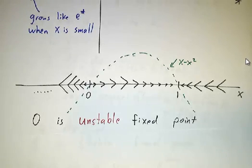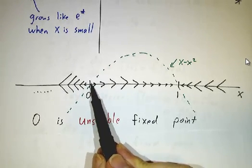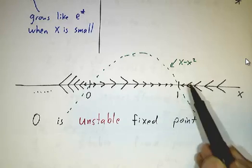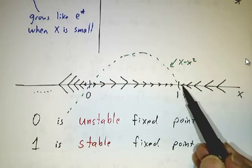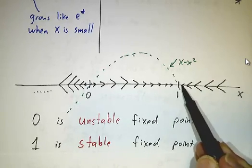We call 0 an unstable fixed point because if you start near 0, you run away. We call 1 a stable fixed point because if you start near 1, you run towards 1.